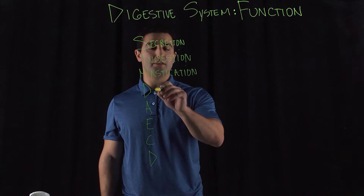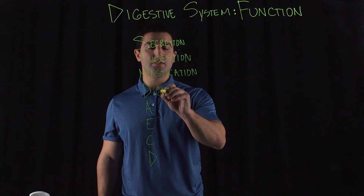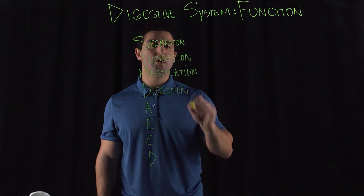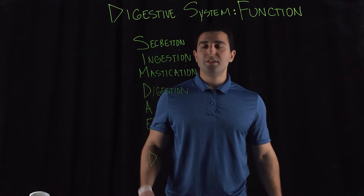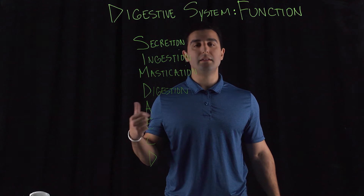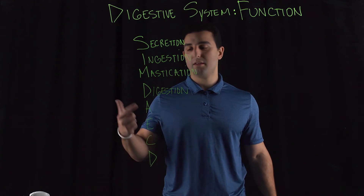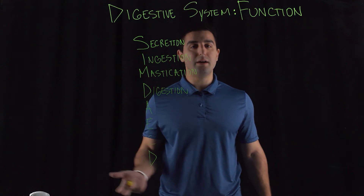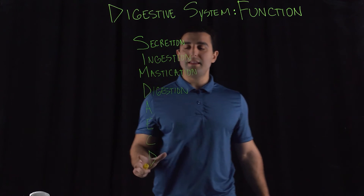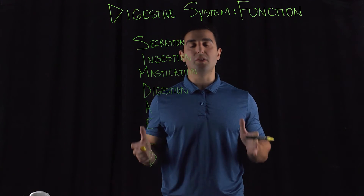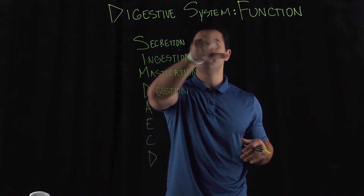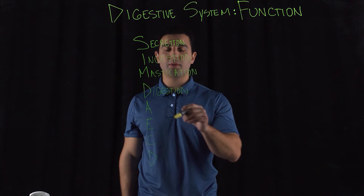Another process here is digestion. Where does digestion take place? Digestion takes place in your stomach, your small intestine, and your mouth — your oral cavity. So again, these acronyms are not necessarily in a specific order; they are just physiological processes that take place in the digestive system.